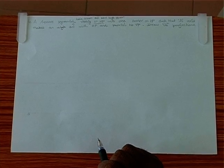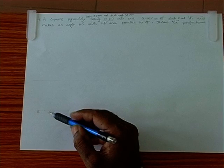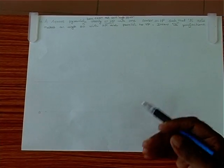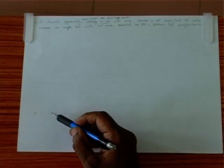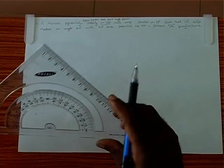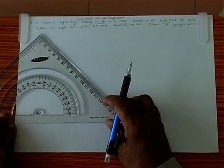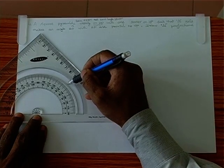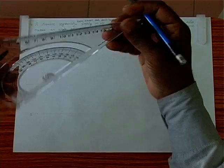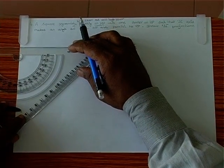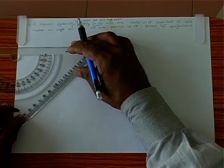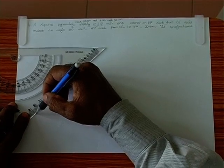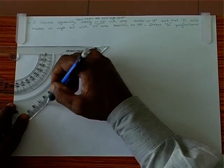The solid is resting on HP with one corner on HP, so we put the solid in corner position. We make the square such that the corner of the square and the center of the square are drawn parallel to XY. If we get a line connecting the corner and center of the square, it should be parallel to XY. So we first draw a 45-degree line with reference to the horizontal, and with the help of this 45-degree line we can complete the square.